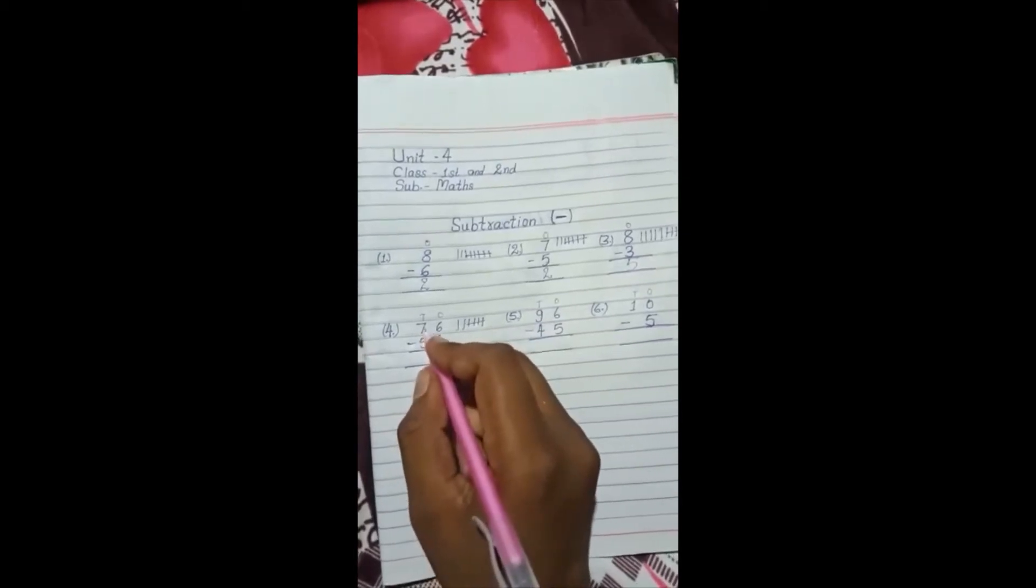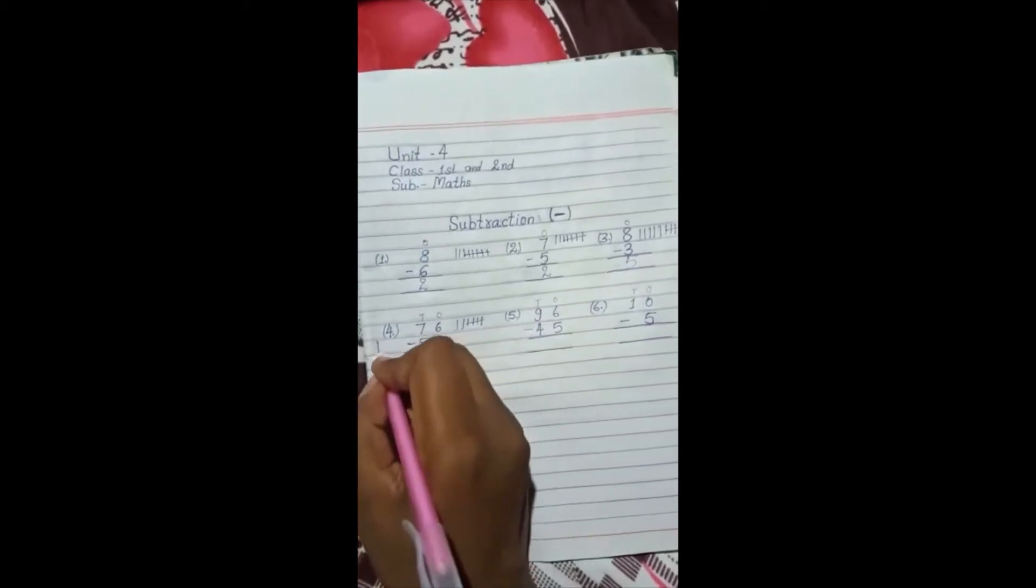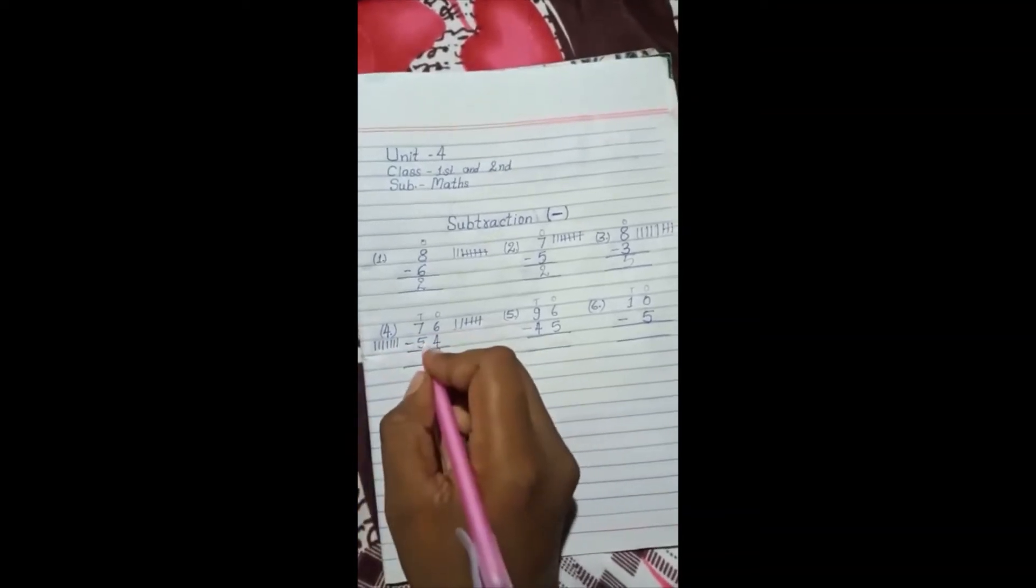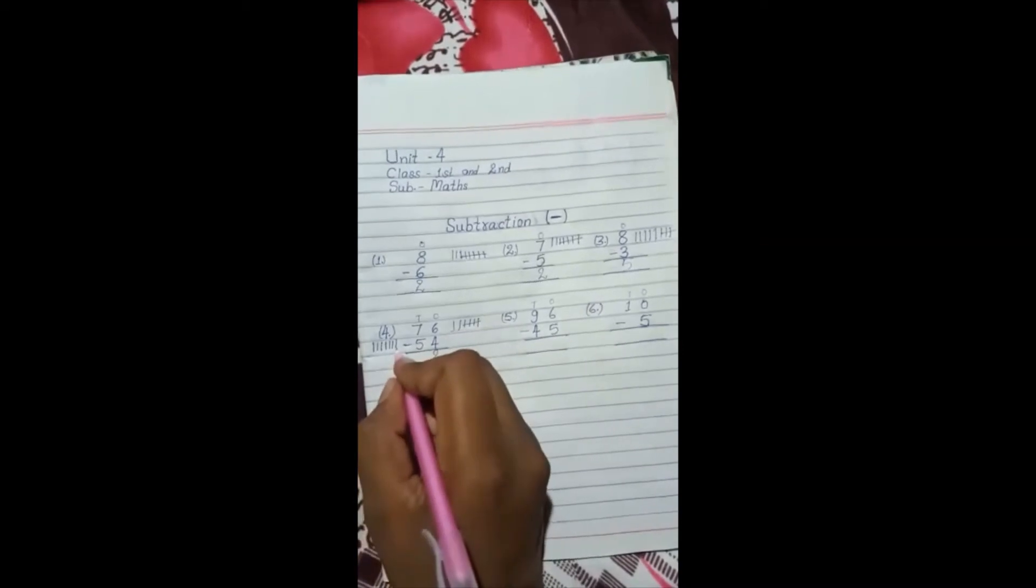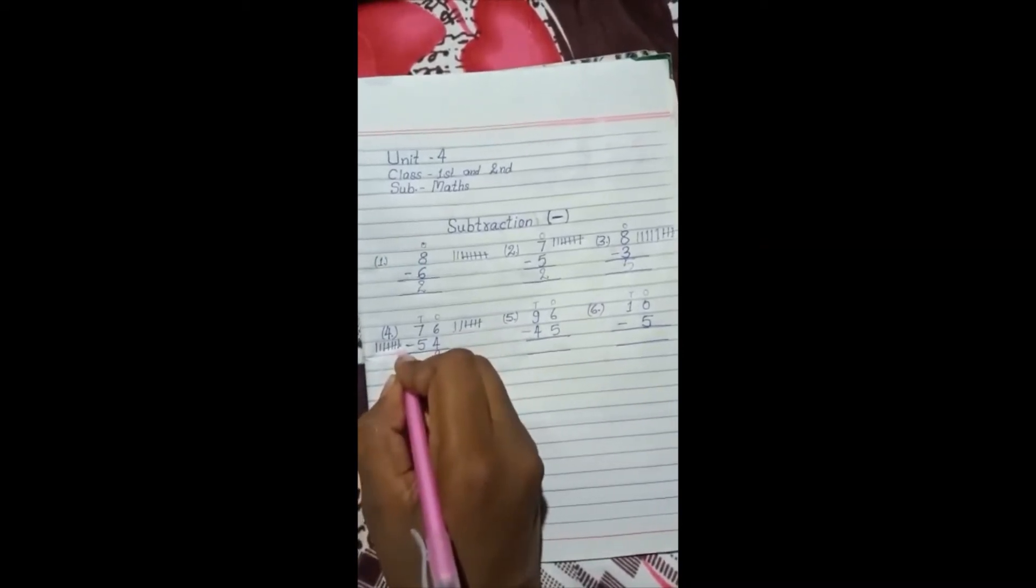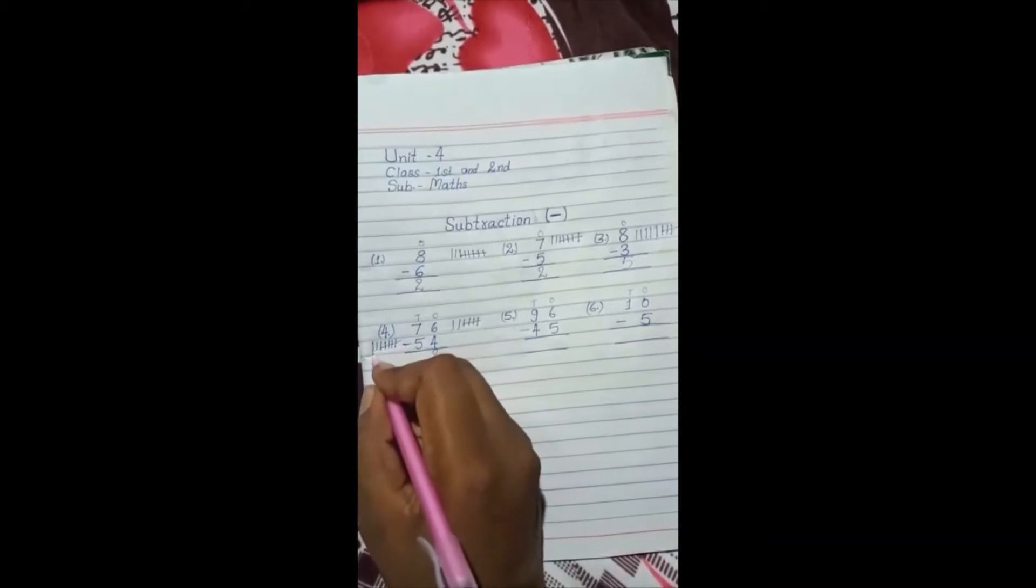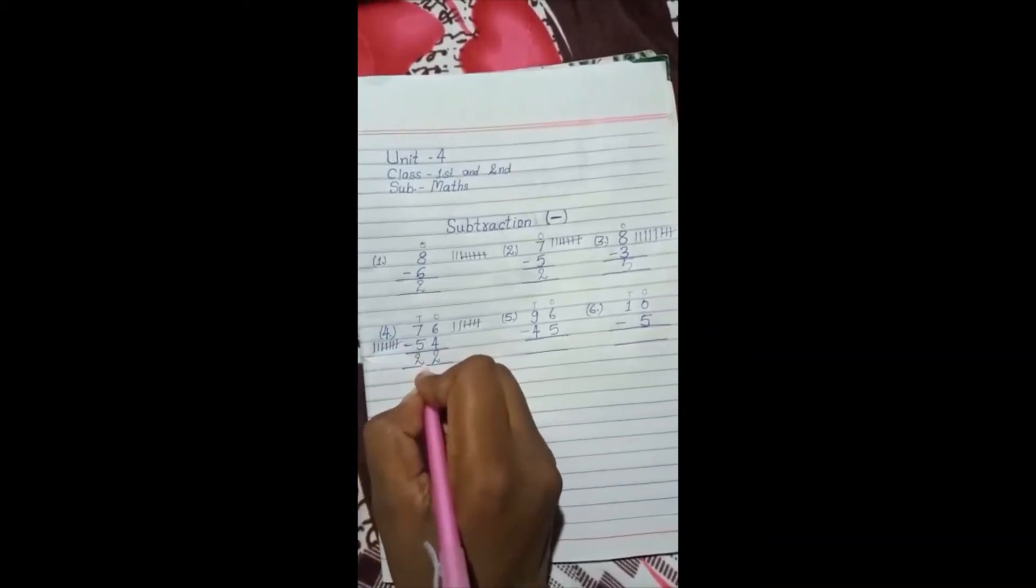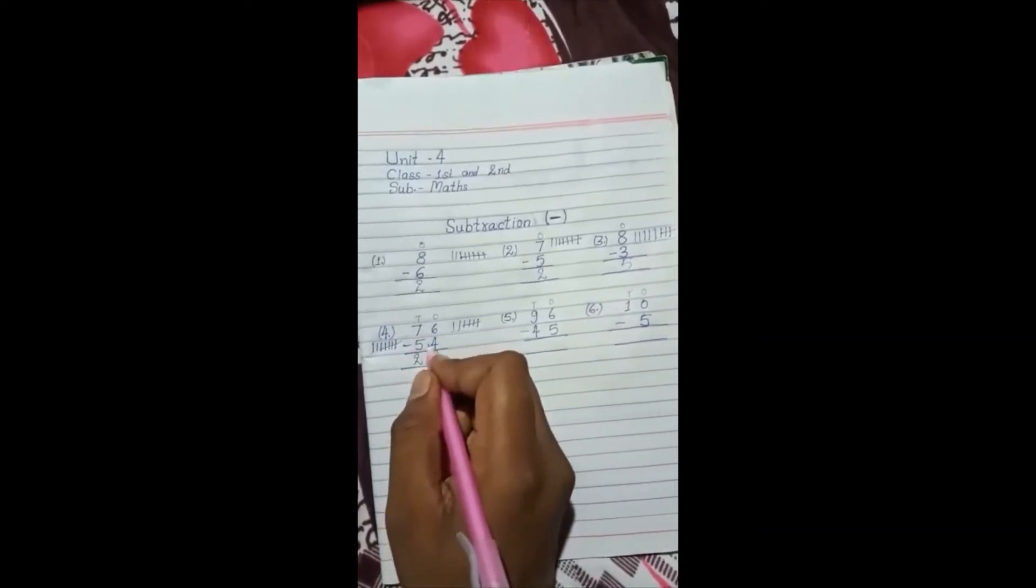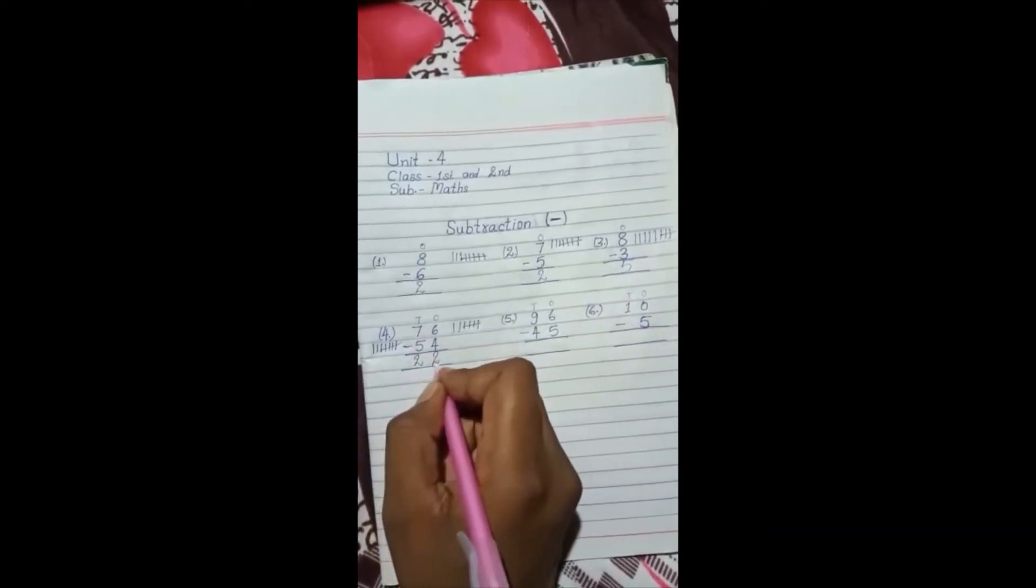Then in tens place, 7. Draw 1, 2, 3, 4, 5, 6, 7 lines. How do we subtract? 5. Count 1, 2, 3, 4, 5. Cross. How many remain? 1, 2. Here we write 2. 76 minus 54 is equal to 22.